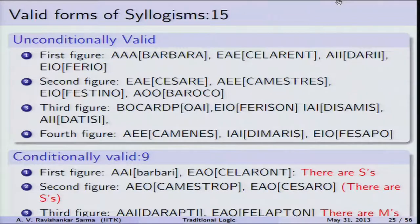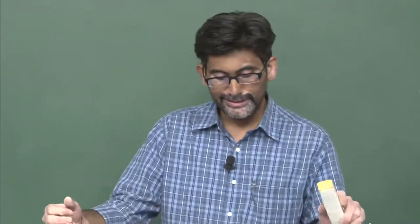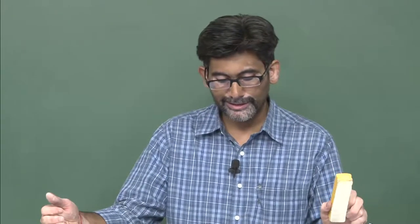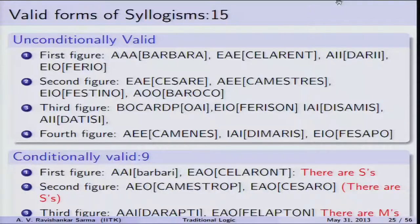Conditional validity means the syllogism is valid only if the subject term is non-empty. For figure 1, AAI and AEO are conditionally valid; for figure 2, AEO and EAO are conditionally valid. Whether the subject term actually refers to existing things determines whether these conditionally valid forms hold.